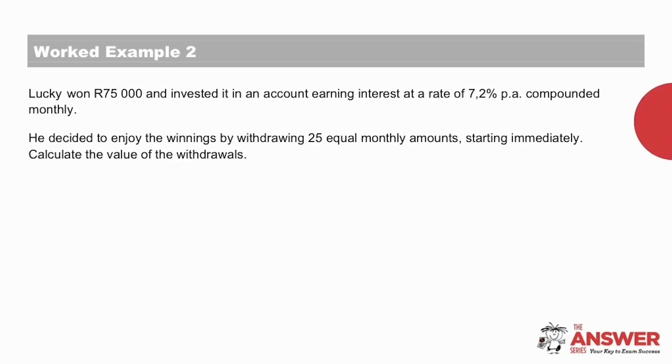And now worked example two. Lucky won 75,000 rand and invested it in an account earning interest at a rate of 7.2% per annum compounded monthly. He decided to enjoy the winnings by withdrawing 25 equal monthly amounts starting immediately. Calculate the value of the withdrawals. Why don't you give this one a go on your own first before moving on to see the solution, which we will go through together.